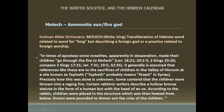This includes Canaan. From the Holman Bible Dictionary: you've likely come across a god named Molech in scripture. Molech happened to be a combination of a sun god and a fire god. The connection makes sense — experiencing sunburn leads you to realize the sun is, in essence, a ball of fire. The Holman Bible Dictionary says Molech is a transliteration of a Hebrew word related to the word for 'king,' but describing a foreign god or a practice related to foreign worship.